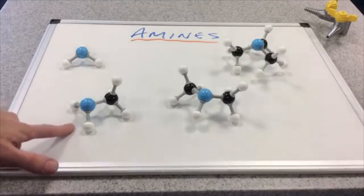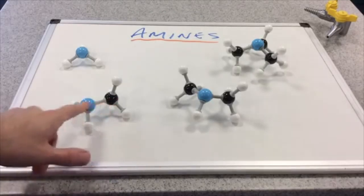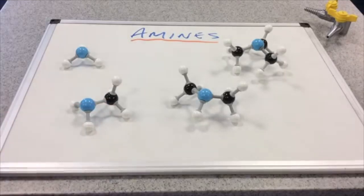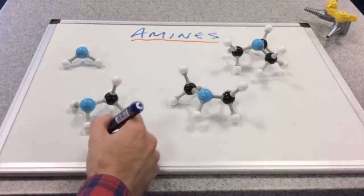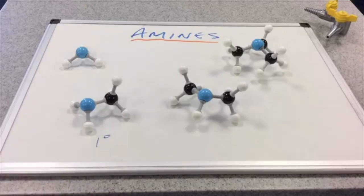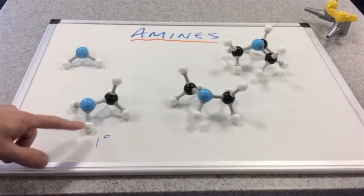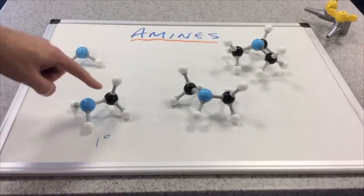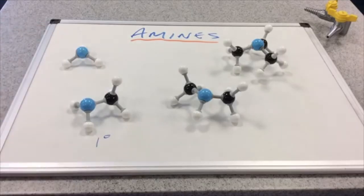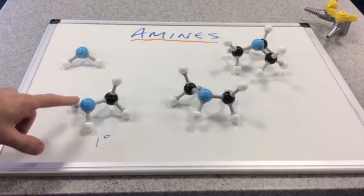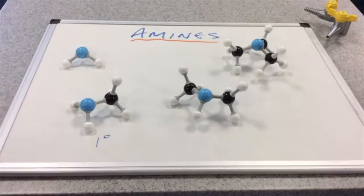We'll start with the simplest amine, this one here. This is called methyl amine and this is what we call a primary amine. That's because the NH2 group or the nitrogen is bonded to one carbon directly. And as a result of that the nitrogen has two hydrogens on it as well.